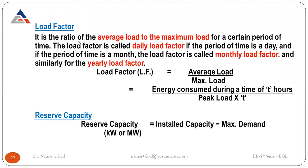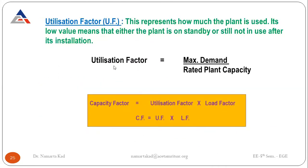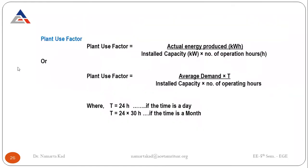These are some definitions covered in our last lecture. Load factor is the energy consumed during time T hours divided by the peak load into T — T depends on whether we calculate load factor yearly, monthly, or daily. Reserve capacity is installed capacity minus maximum demand. Plant capacity factor is average demand divided by rated plant capacity, or using the formula: maximum load divided by plant installed capacity multiplied by load factor. Utilization factor equals maximum demand divided by rated plant capacity, and their interrelation is: capacity factor equals utilization factor into load factor.